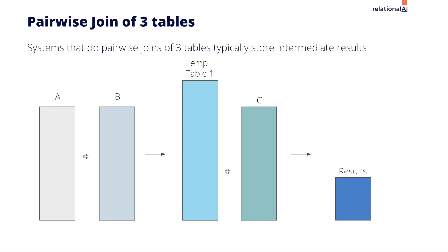Imagine we are joining three tables. Traditional relational database systems join these tables in a sequential pairwise fashion. They join table A with table B, store the result in a temporary table, and then join that temp table with table C to get the results.